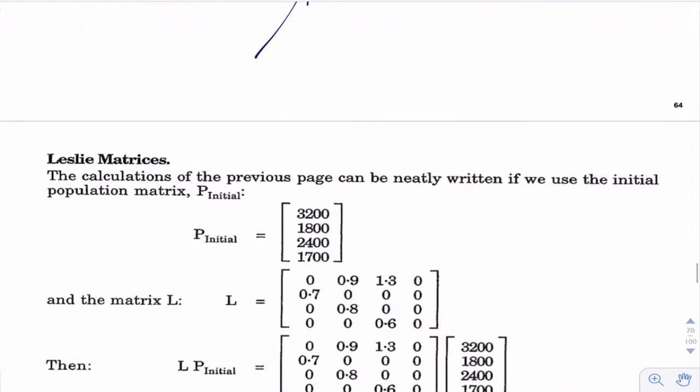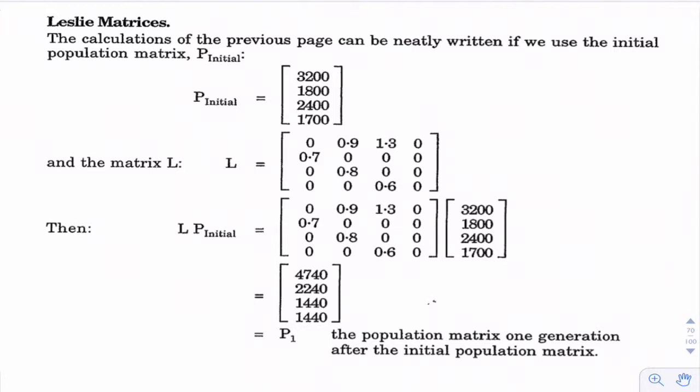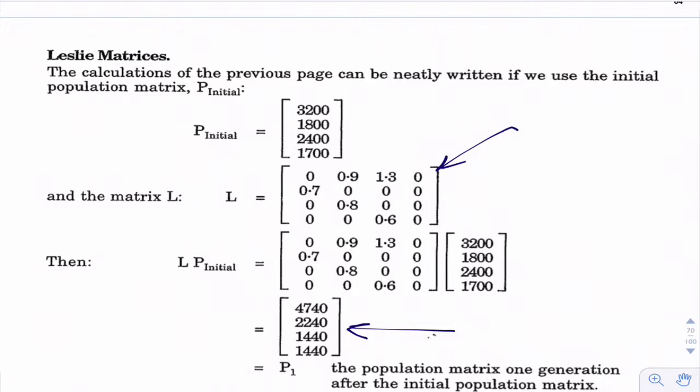Now we want to put all this in matrix language — this is called a Leslie matrix. Here's the matrix that describes how we can get these numbers very easily. Along the top we have 0, 0.9, 1.3, and 0 — these are our reproduction rates. Taking that first row and multiplying it by the column matrix representing the initial population numbers gives us our number of juveniles.